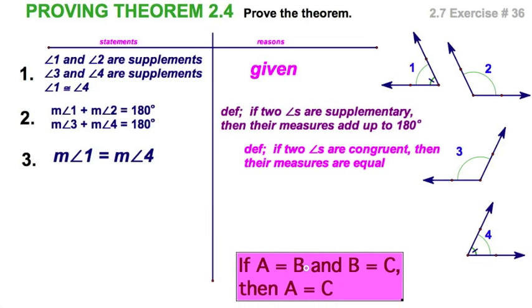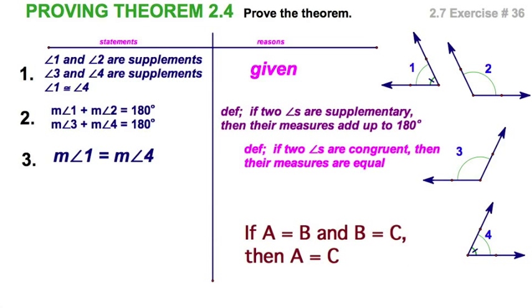I need to go way back to algebra. If A equals B and B equals C, then A equals C. You all remember, you learned that in algebra as the transitive property. The transitive property is going to work here, too. Let's suppose A is the measure of angle 1 plus the measure of angle 2 equals 180. That's your B. 180 is also equal to the measure of angle 3 plus the measure of angle 4. A equals B, and B equals C, then A equals C.